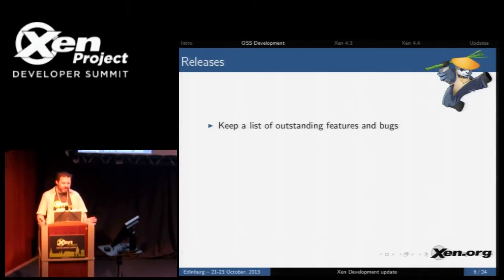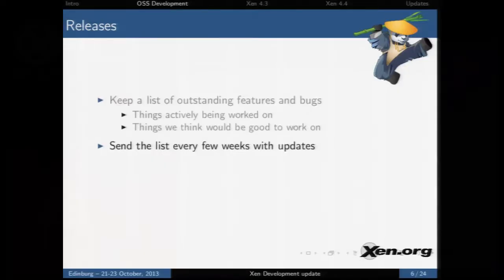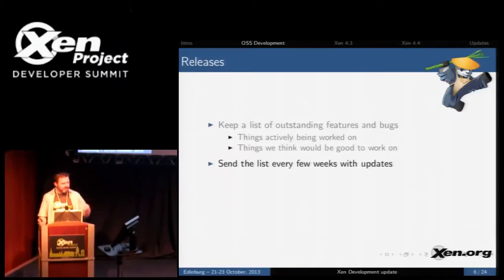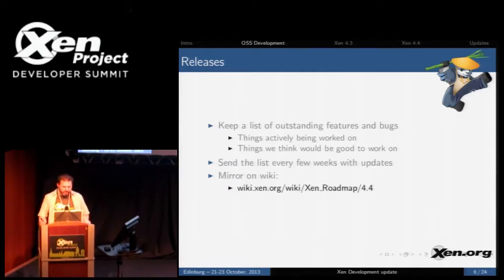The mechanism we use is keeping a list of outstanding features and bugs — things actively being worked on and things we think would be good to work on. The release coordinator maintains this list and sends it to the mailing list every few weeks. Developers respond with updates on where they are in their projects. We also have a mirror on the wiki that should be in sync with the most recent list.